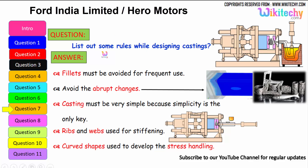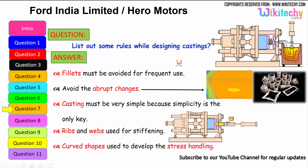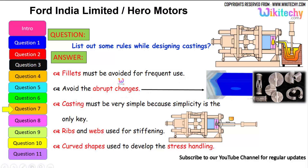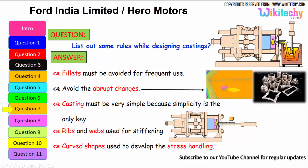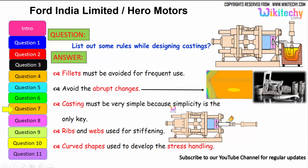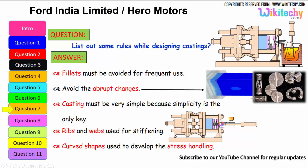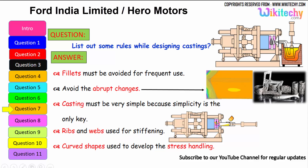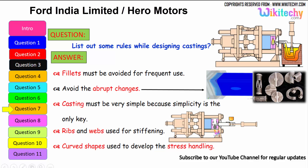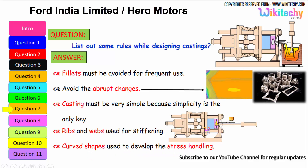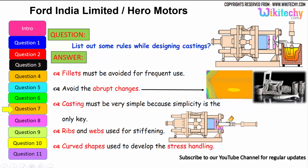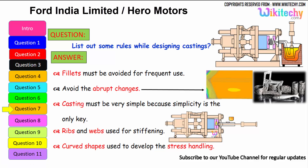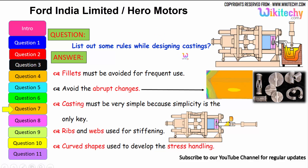Let us see some of the rules while designing castings. Fillets must be avoided for frequent use. Avoid abrupt changes in section — it should not change suddenly. Castings must be kept very simple, because simplicity is the key. Ribs and webs are used for stiffening. Curved shapes should be used to improve stress handling. These are the rules to follow for castings.